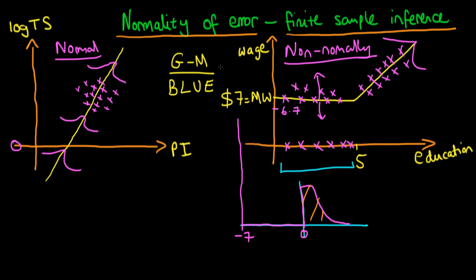So why do we care? Why is it important that we assume normally distributed errors? Because the central limit theorem tells us that as sample size goes to infinity we can assume beta hat is asymptotically normally distributed. But if we have a small sample size — say less than around 30 — we can't rely on the central limit theorem. So the assumption of normal errors matters a great deal for inference.